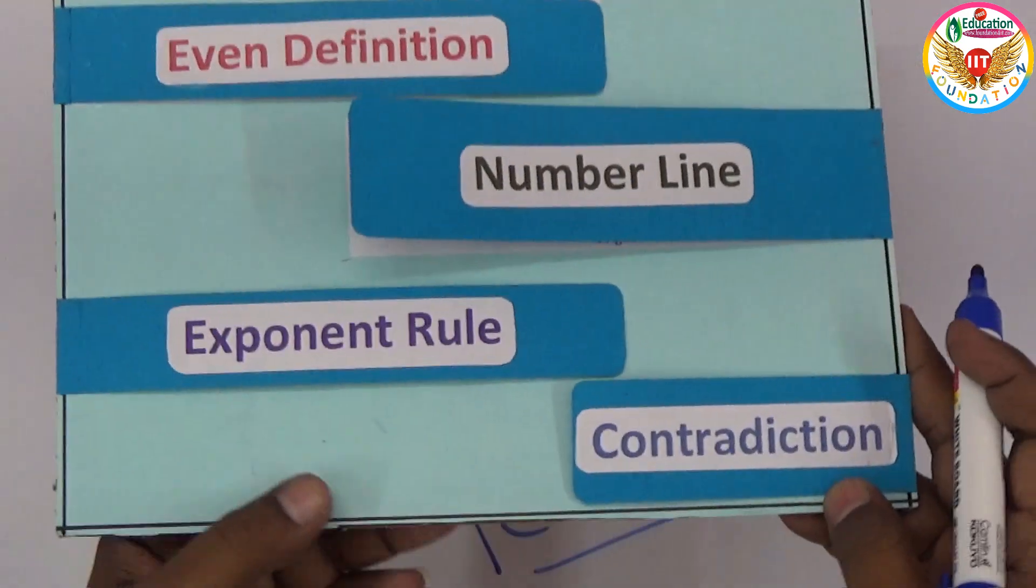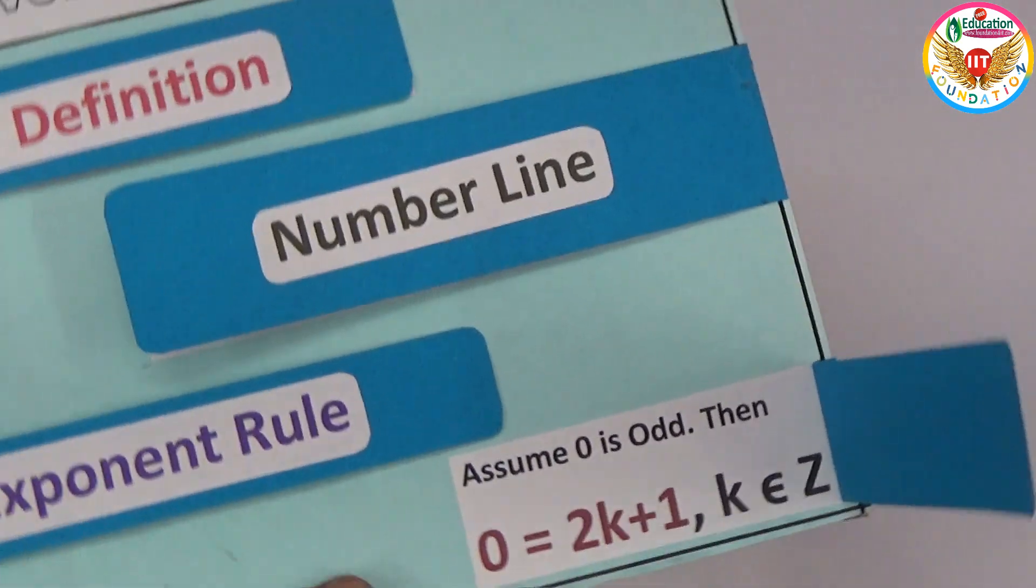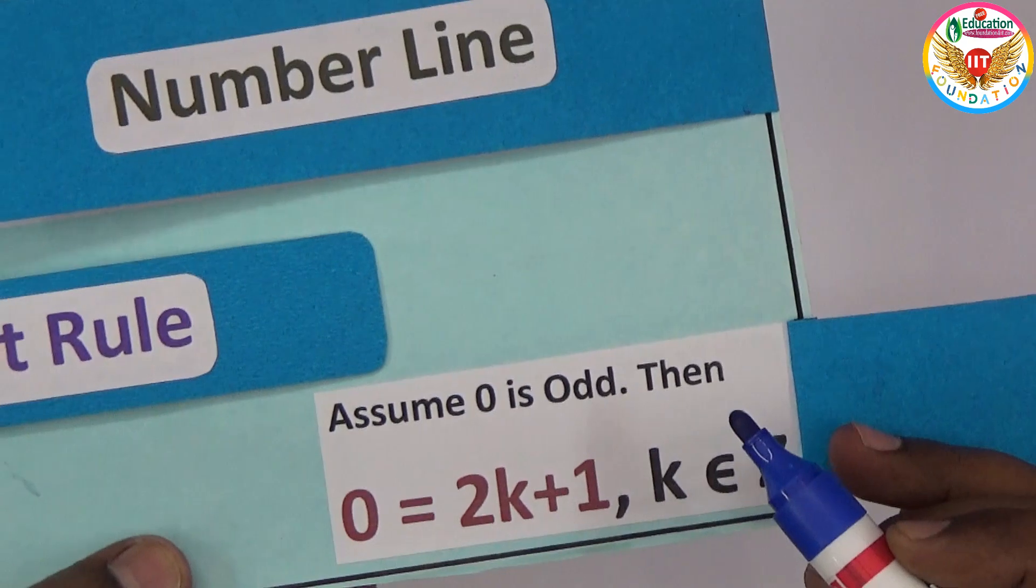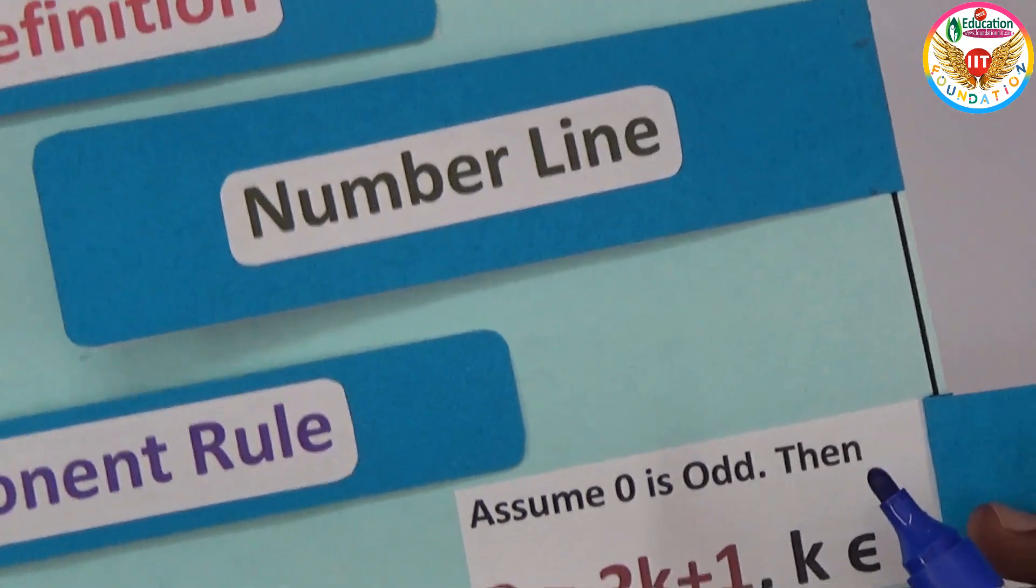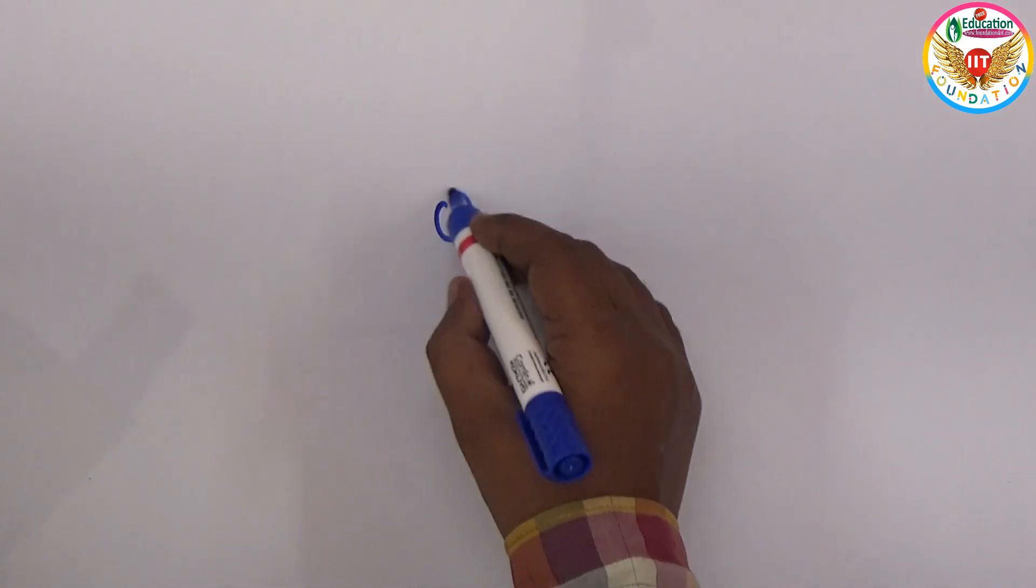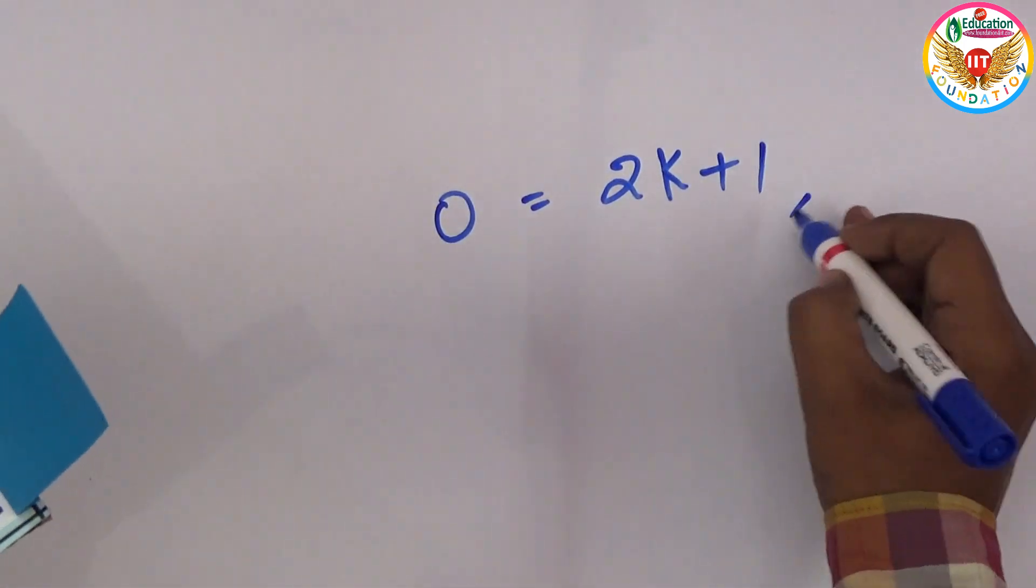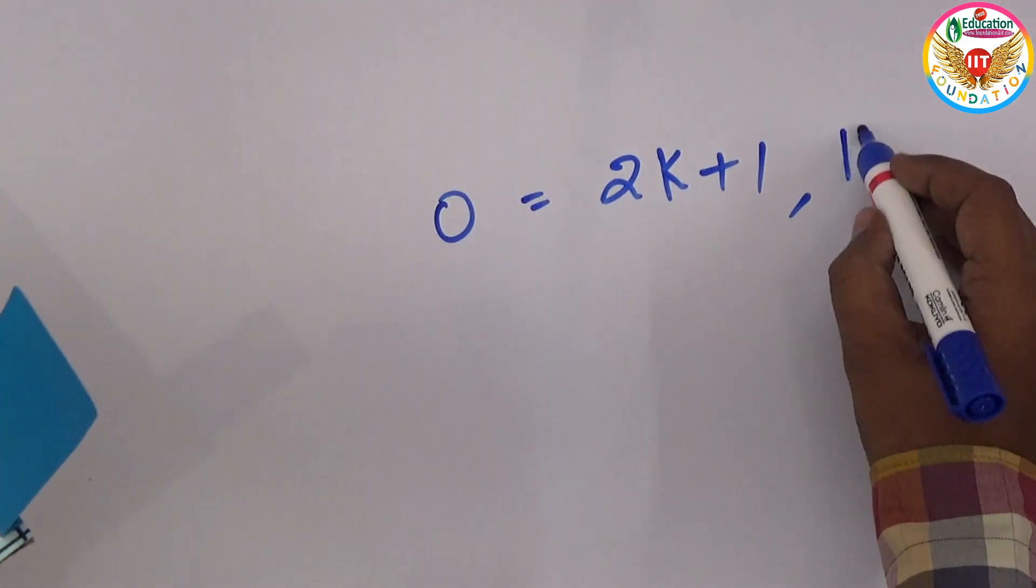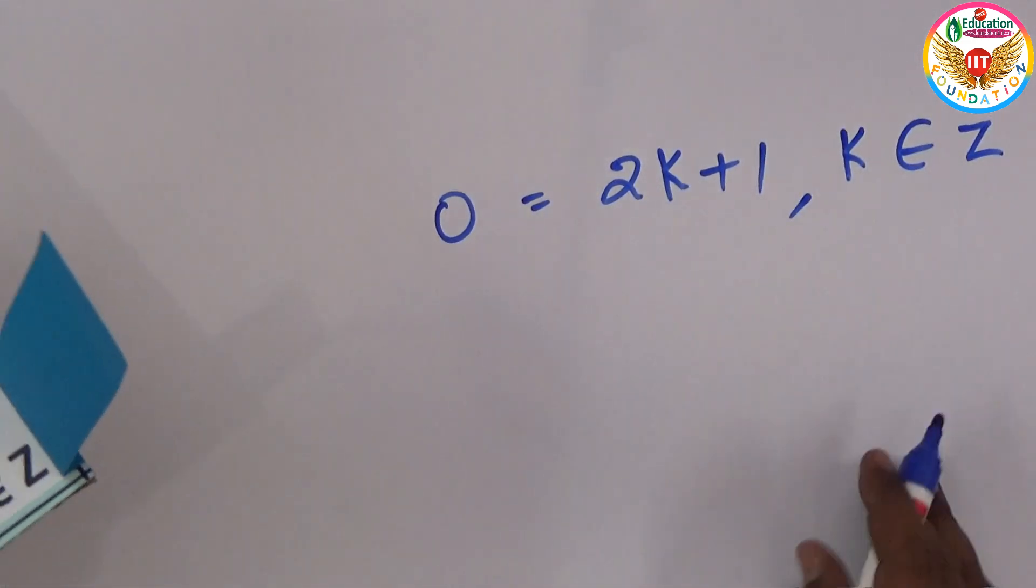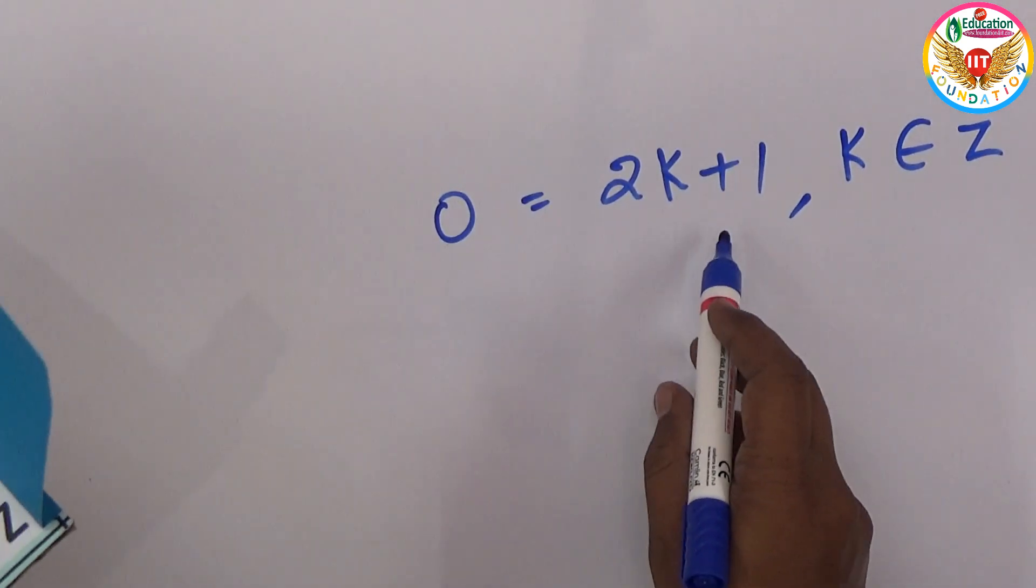And if you see the contradiction method to prove zero or not, instead of proving zero is even, let us assume zero is odd and prove whether that works or not. Assume zero is odd. That means the odd rule is zero equals 2k plus one, where k belongs to integers. We know that this is the odd number definition: 2k plus one.